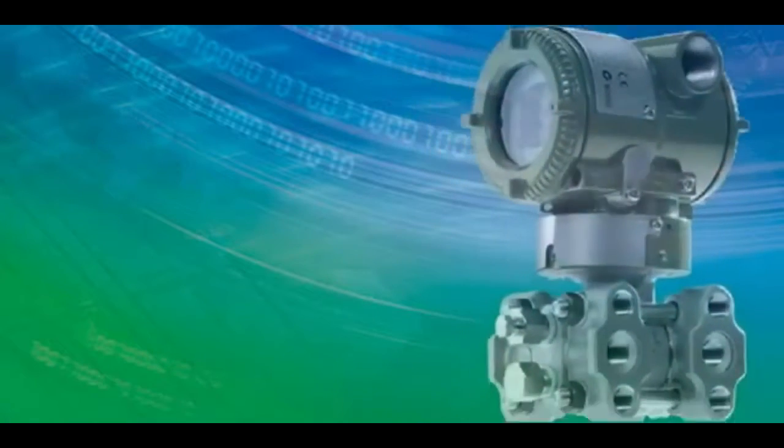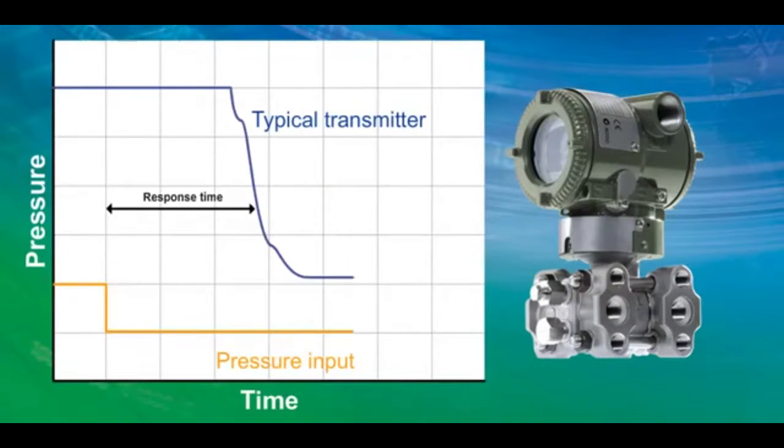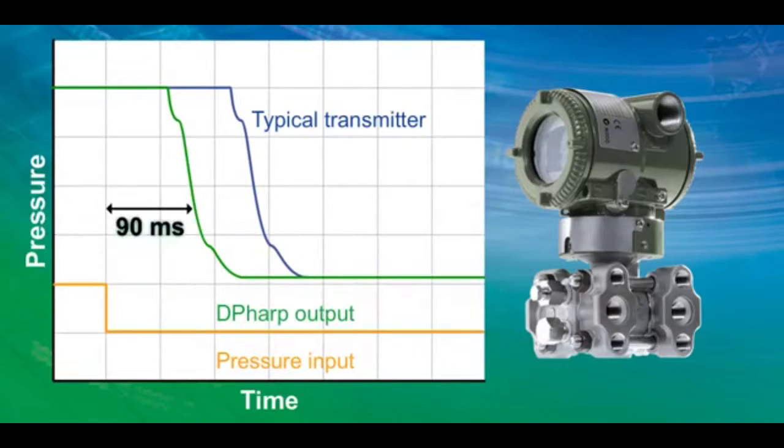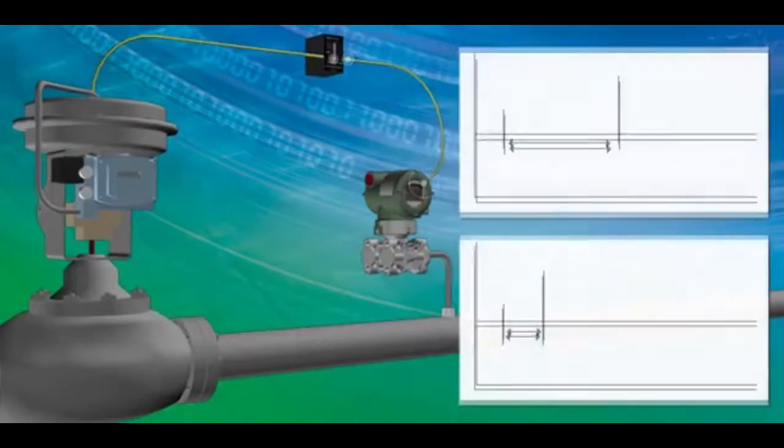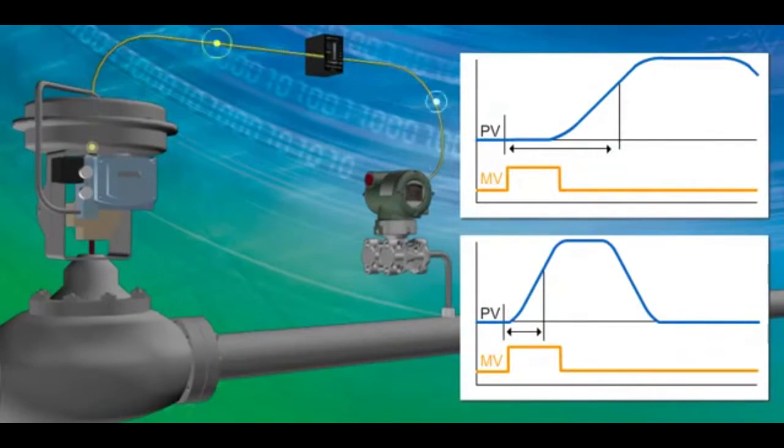The response time of a transmitter is key to safe and accurate process control. Yokogawa's DP-HARP pressure transmitter family features the fastest response time available on the market today. Having a faster response time allows for tighter process control and increased plant efficiency.